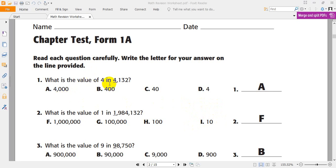What is the value of 4 in this number? If you want to know the value in this number, the value for the number 4, just all you have to do is to read the number. 4,132. 4,000. We pronounced 4 as 4,000. So, the right answer is A.